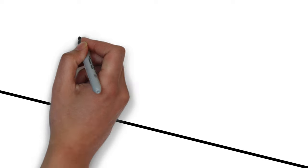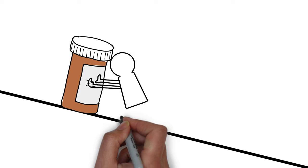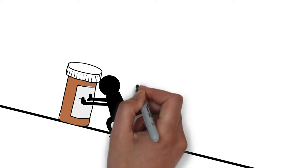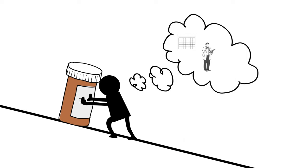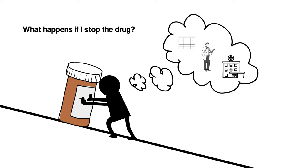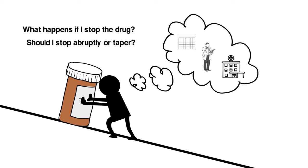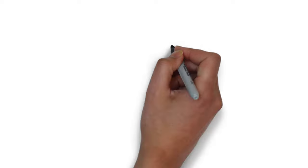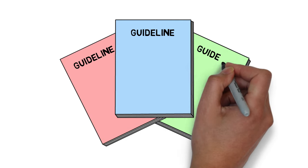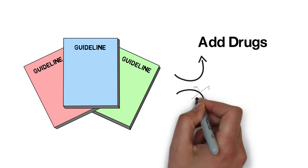But reducing doses or stopping medications can be difficult. Sometimes the original reason for the medication is unknown, especially if it was prescribed many years ago or by a different prescriber or in a hospital. Sometimes prescribers are worried about what might happen if they stop a drug. They're not sure if a drug can be stopped abruptly or needs to have the dose lowered slowly. And many disease guidelines recommend adding drugs, but they don't address when or how to stop them.